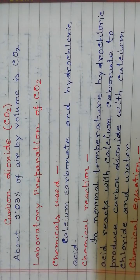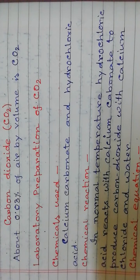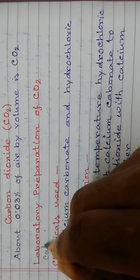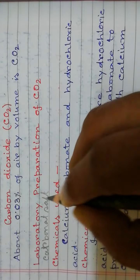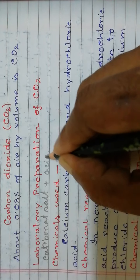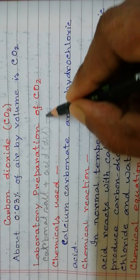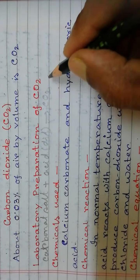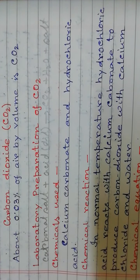Now the question is: how do we prepare carbon dioxide? Generally, carbon dioxide is prepared by the reaction of any carbonate or bicarbonate salt with any dilute acid. When any dilute acid reacts with a carbonate salt, it forms carbon dioxide along with water and another salt. This is the principle of preparation of carbon dioxide.